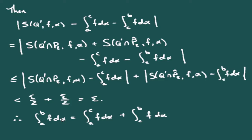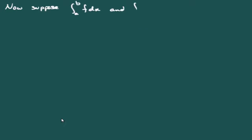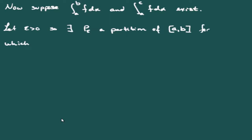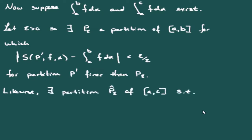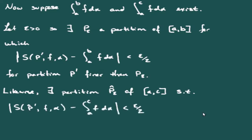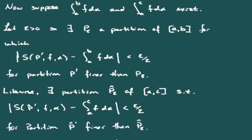Now suppose instead we know the integral from A to B of f dα and the integral from A to C of f dα both exist. Let ε > 0. There is a partition P_ε of [A, B] such that any Riemann-Stieltjes sum over a refinement differs from the integral by less than ε/2. Similarly, there is a partition P̂_ε of [A, C] giving the same ε/2 bound for the integral from A to C.